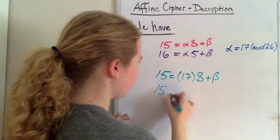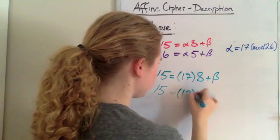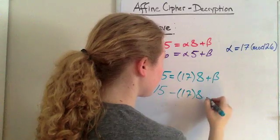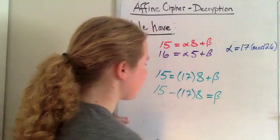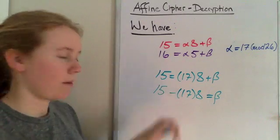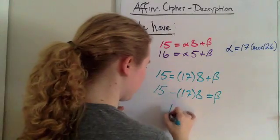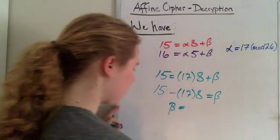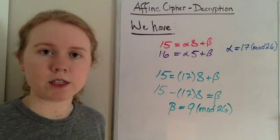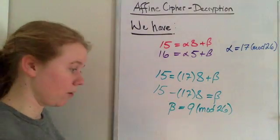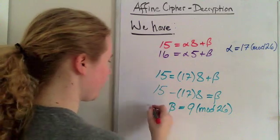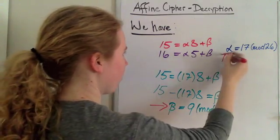And then we can say that 15 minus 17 times 8 equals beta. If you do that math with modular arithmetic, we get that beta equals 9 mod 26. So now we have our key. We have both our beta here, and we have our alpha.